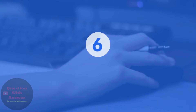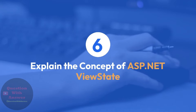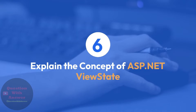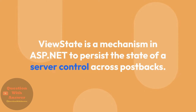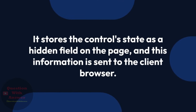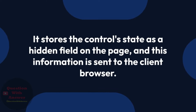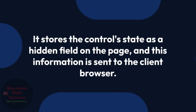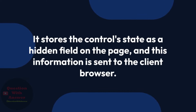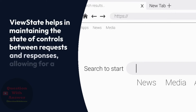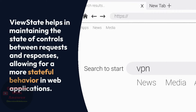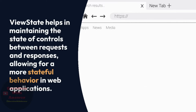Question 6: Explain the concept of ASP.NET ViewState. Answer: ViewState is a mechanism in ASP.NET to persist the state of a server control across postbacks. It stores the control state as a hidden field on the page, and this information is sent to the client browser. ViewState helps in maintaining the state of controls between requests and responses, allowing for a more stateful behavior in web applications.